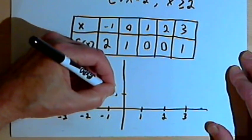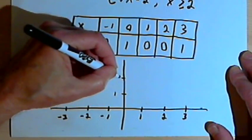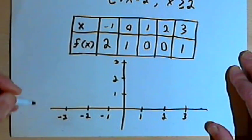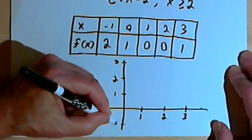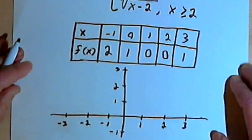I'll put in some y values: 1, 2, 3, and maybe a negative 1. And let's plot this.